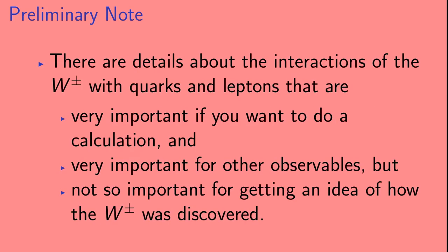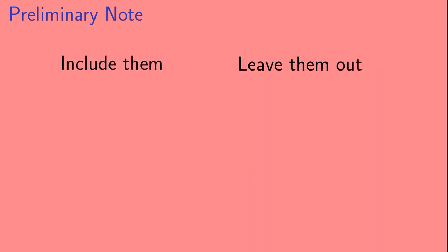Now, there are details about the interactions of the W with quarks and leptons that are very important if you want to do a calculation, and very important for other observables, but not so important for getting an idea of how the W was discovered. So, there are a couple of ways that I could choose to handle these details. I could choose to include them, or I could choose to leave them out.